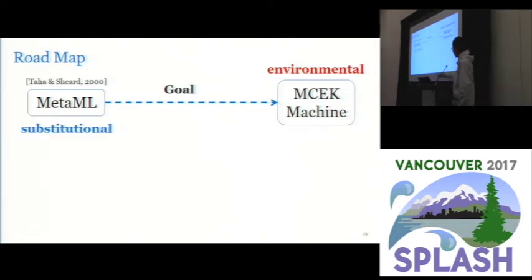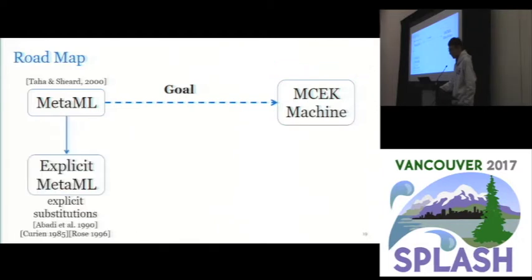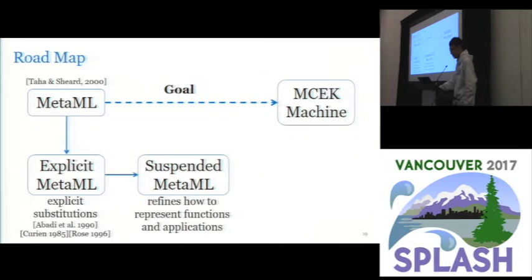Refining substitutional semantics to environmental semantics is not straightforward. So we'd like to take a detour to solve this problem. In order to bridge the gap between the two semantics, we leverage the concept of explicit substitutions and we derive this explicit MetaML. To more closely resemble the behavior of environmental semantics, we refine how to represent functions and applications and we derive this suspended MetaML.